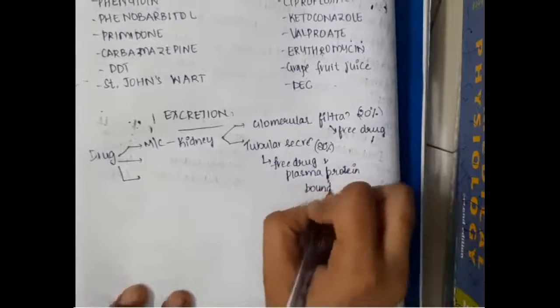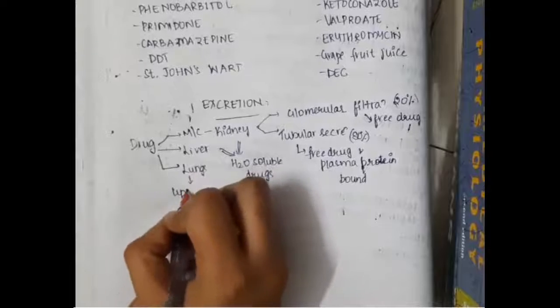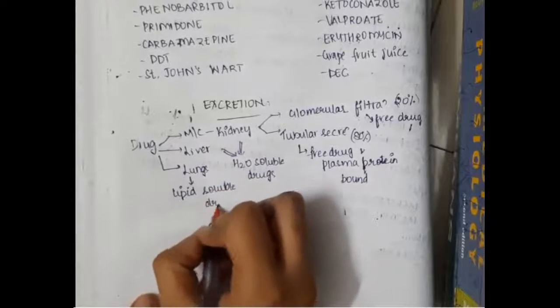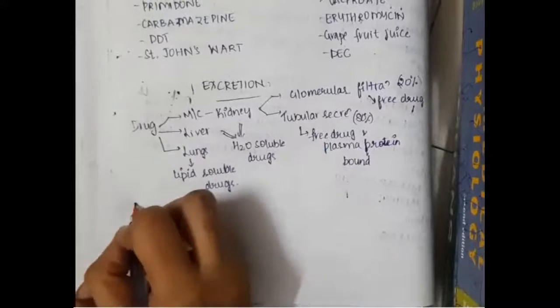The drugs are also excreted with the help of the liver. With liver and kidney, mainly the water-soluble drugs are excreted. And in the lungs, mainly the lipid-soluble drugs are excreted.